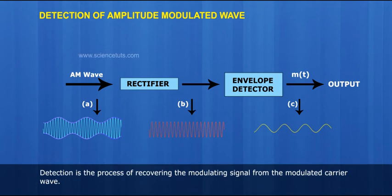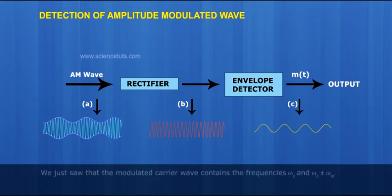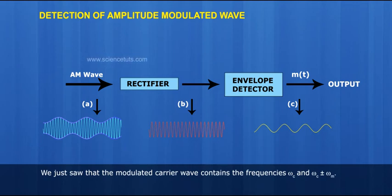We just saw that the modulated carrier wave contains the frequencies omega c and omega c plus or minus omega m.